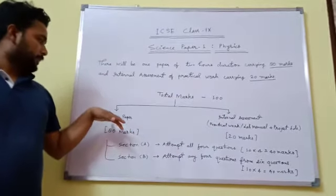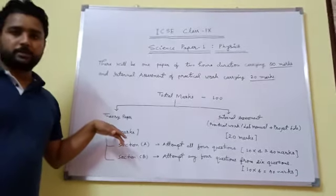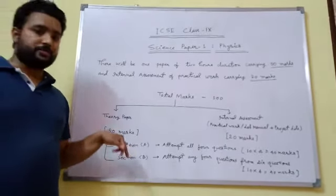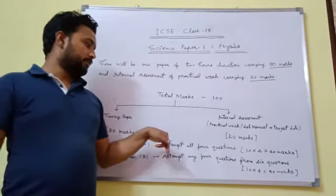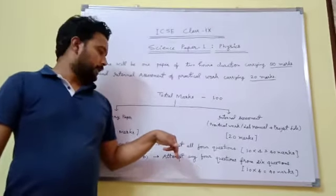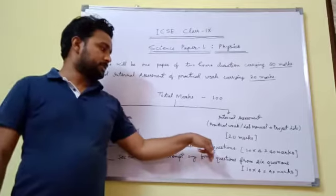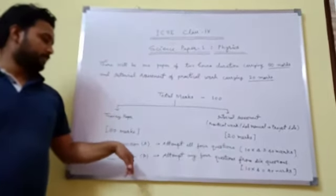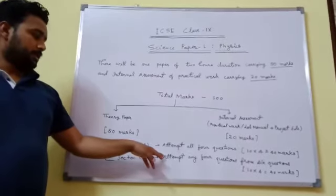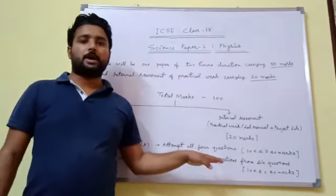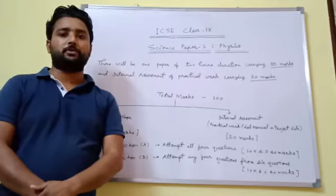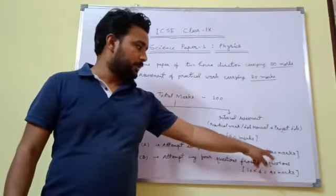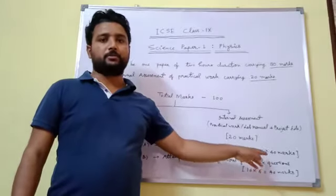The theory paper contains 80 marks and has 2 sections. In section A there will be 4 questions — attempt all questions. In section B there will be 6 questions and attempt any 4. Total marks will be 40 from section A and 40 from section B, totalling 80 marks.